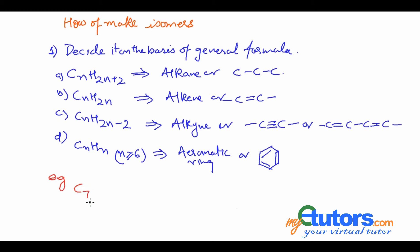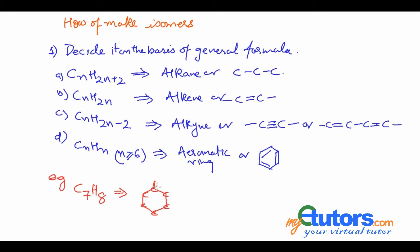For example, in C₄H₉Cl, the molecular formula corresponds to CₙH₂ₙ₊₂ because chlorine is singly bonded with the carbon atom, so the carbon framework would be C single bond C. Similarly, for C₇H₈, since the number of carbon atoms is greater than 6, it would be an aromatic compound, and we can draw it accordingly.